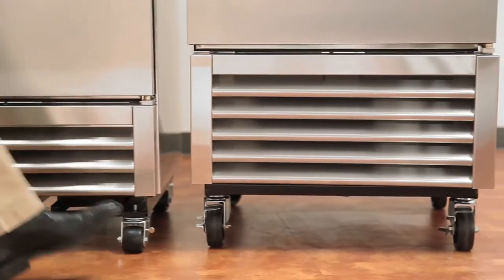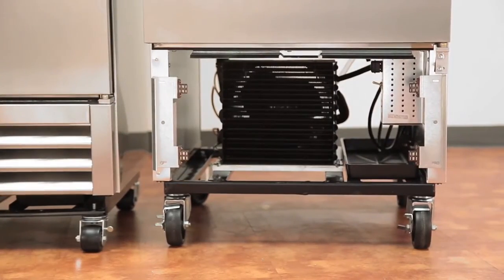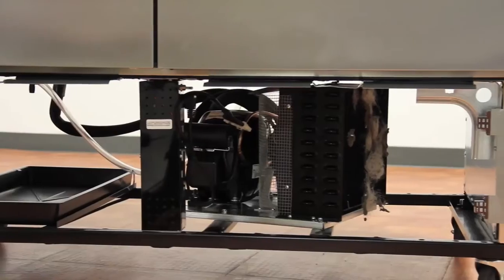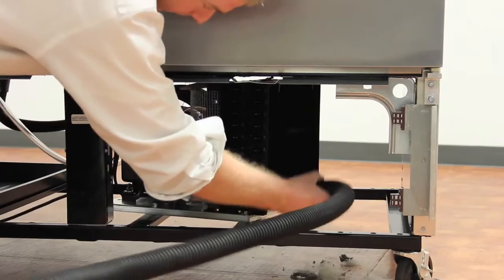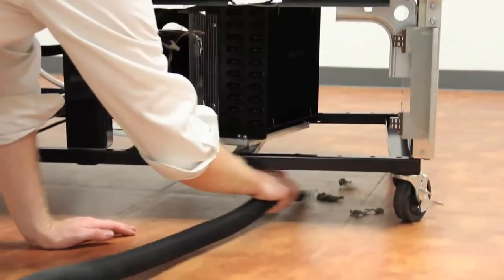A recommended rule is to check the condenser coil every month for the first three months of use. This will tell you how dirty your environment is. Generally, you should be cleaning your condenser coil every 60 to 90 days, depending on the environment in which it is used.